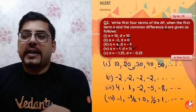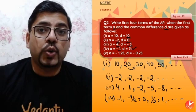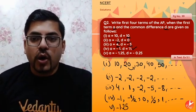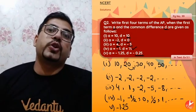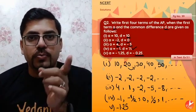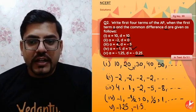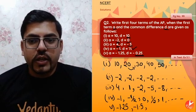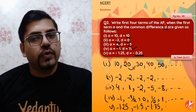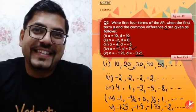Aur uske baad fifth wale ki baat karo toh pehla term hai minus 1.25. Iske baad every time you have to subtract 0.25, because D = -0.25 hai. Toh minus 1.25 minus 0.25 = minus 1.5. Phir minus 1.5 minus 0.25 = minus 1.75. Phir minus 1.75 minus 0.25 = minus 2, and so on. So the AP is: -1.25, -1.5, -1.75, -2...